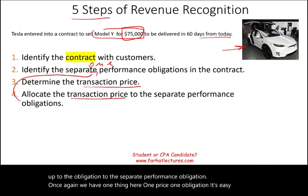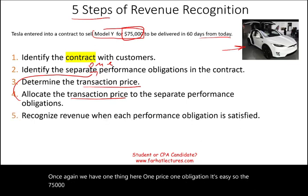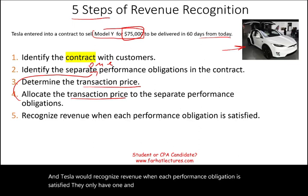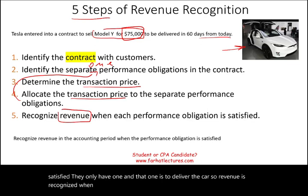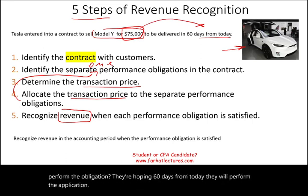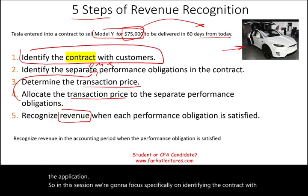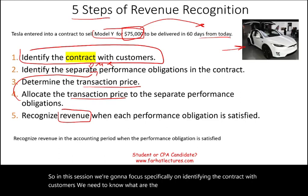The $75,000 is allocated toward the car. Step five: Tesla recognizes revenue when the performance obligation is satisfied — that is, when the car is delivered. They're hoping to deliver it 60 days from today. In this session, we're going to focus specifically on step one: identifying the contract with customers, and understanding the different pieces that make up a valid contract.